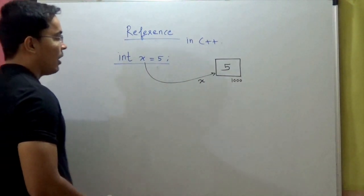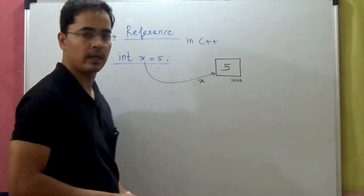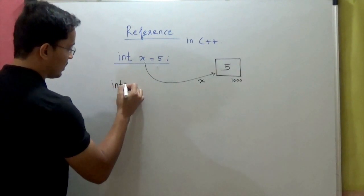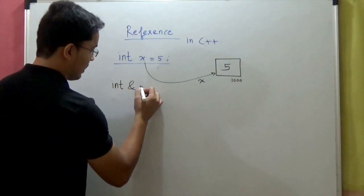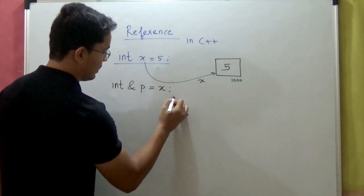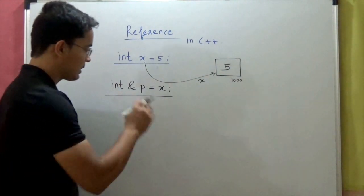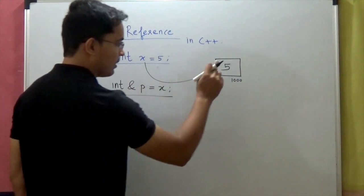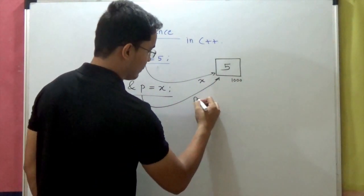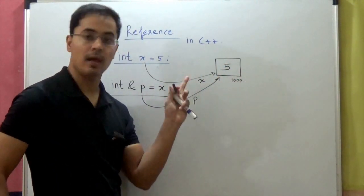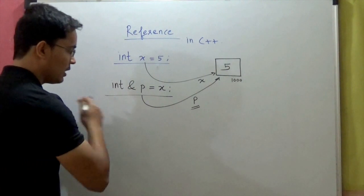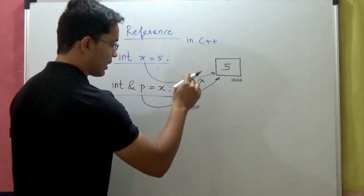Now how do you create a reference? A reference is nothing but creating another name for the existing variable. We write: int ampersand p equal to x. As soon as you make this declaration, the same memory location can now be accessed by another name called p. So you could access this memory location by name x, and now you have another way of accessing it by using name p. From this point onwards, you can manipulate this memory location by either x or p.